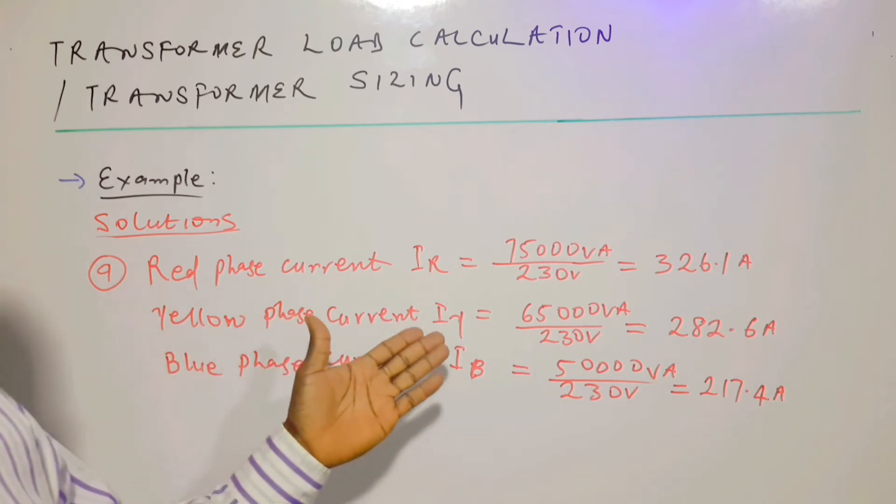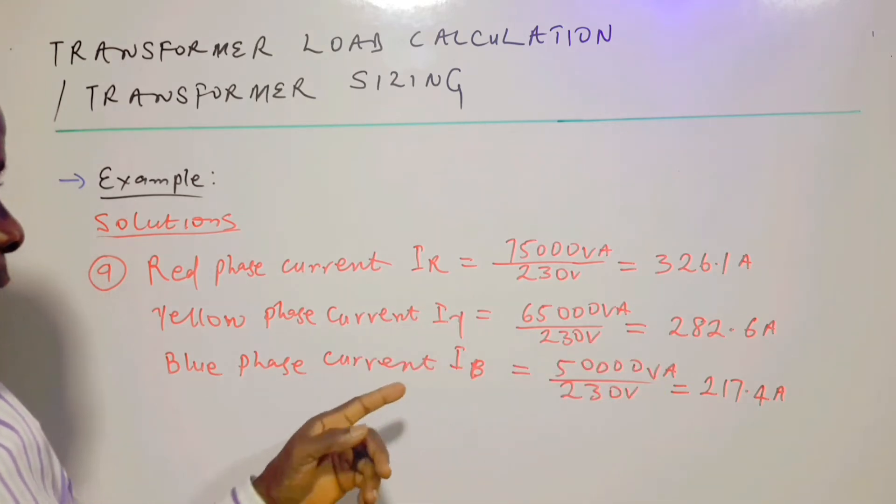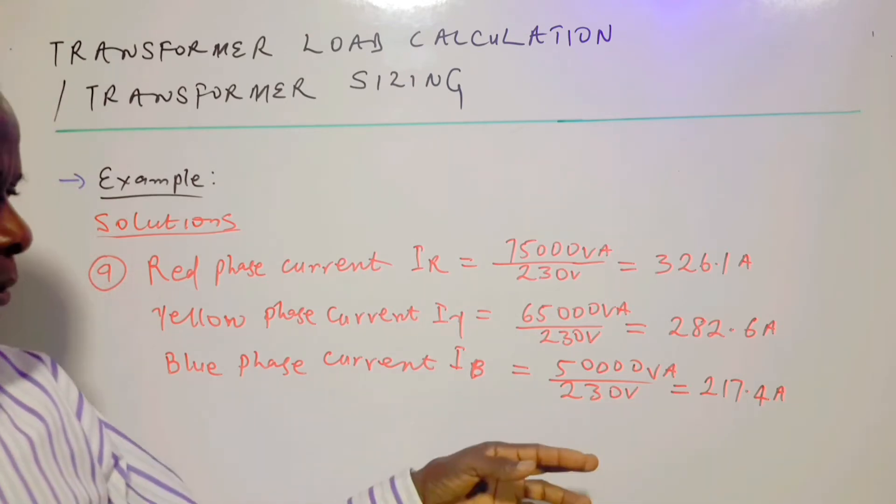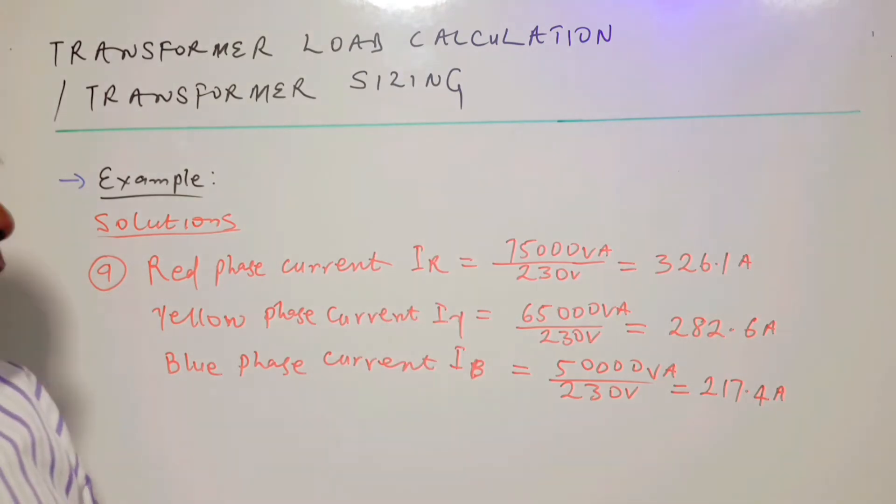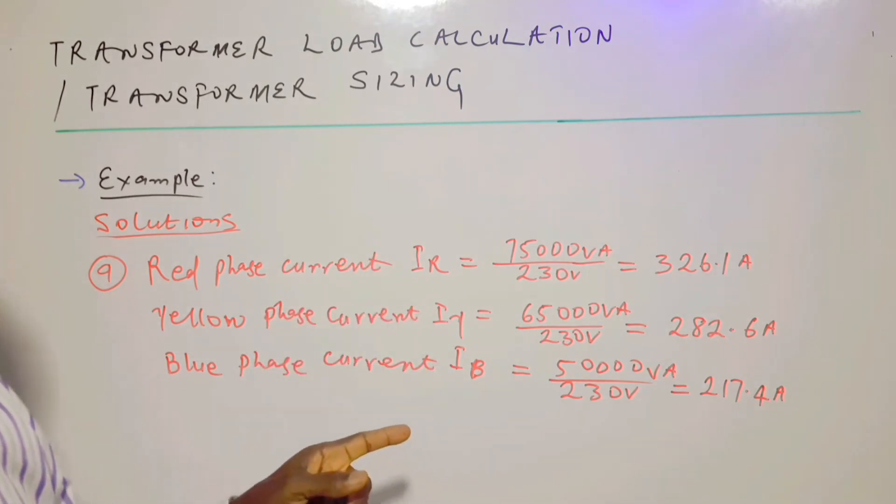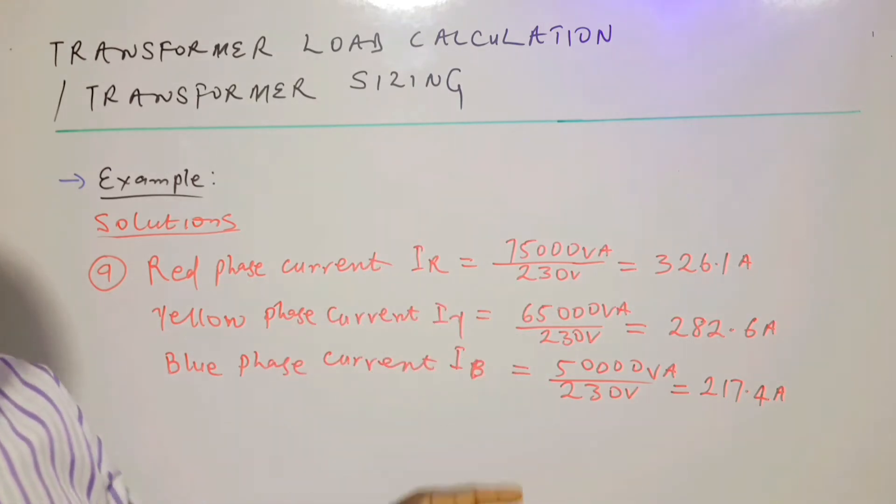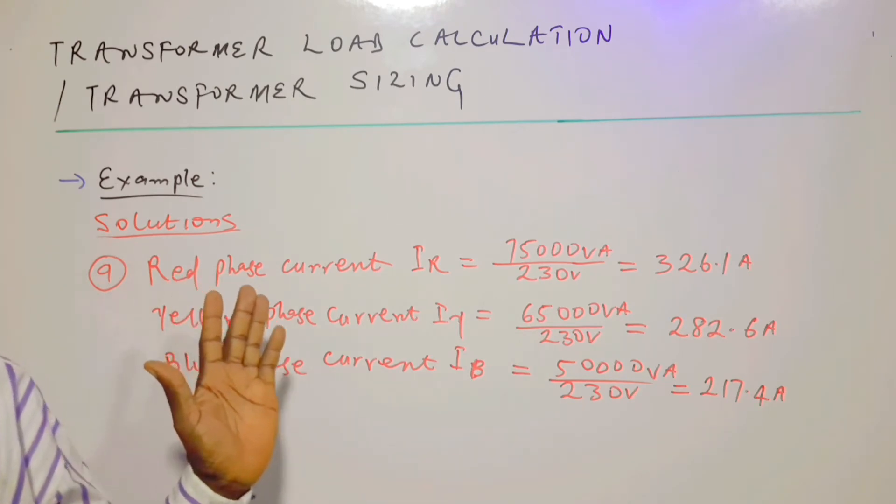The current in the yellow phase is 282.6 ampere. Blue phase current is 217.4 ampere. In doing this calculation, the power must be in VA, not in kVA, because the unit is VA since the voltage is in volts. And that is the solution to the A part.